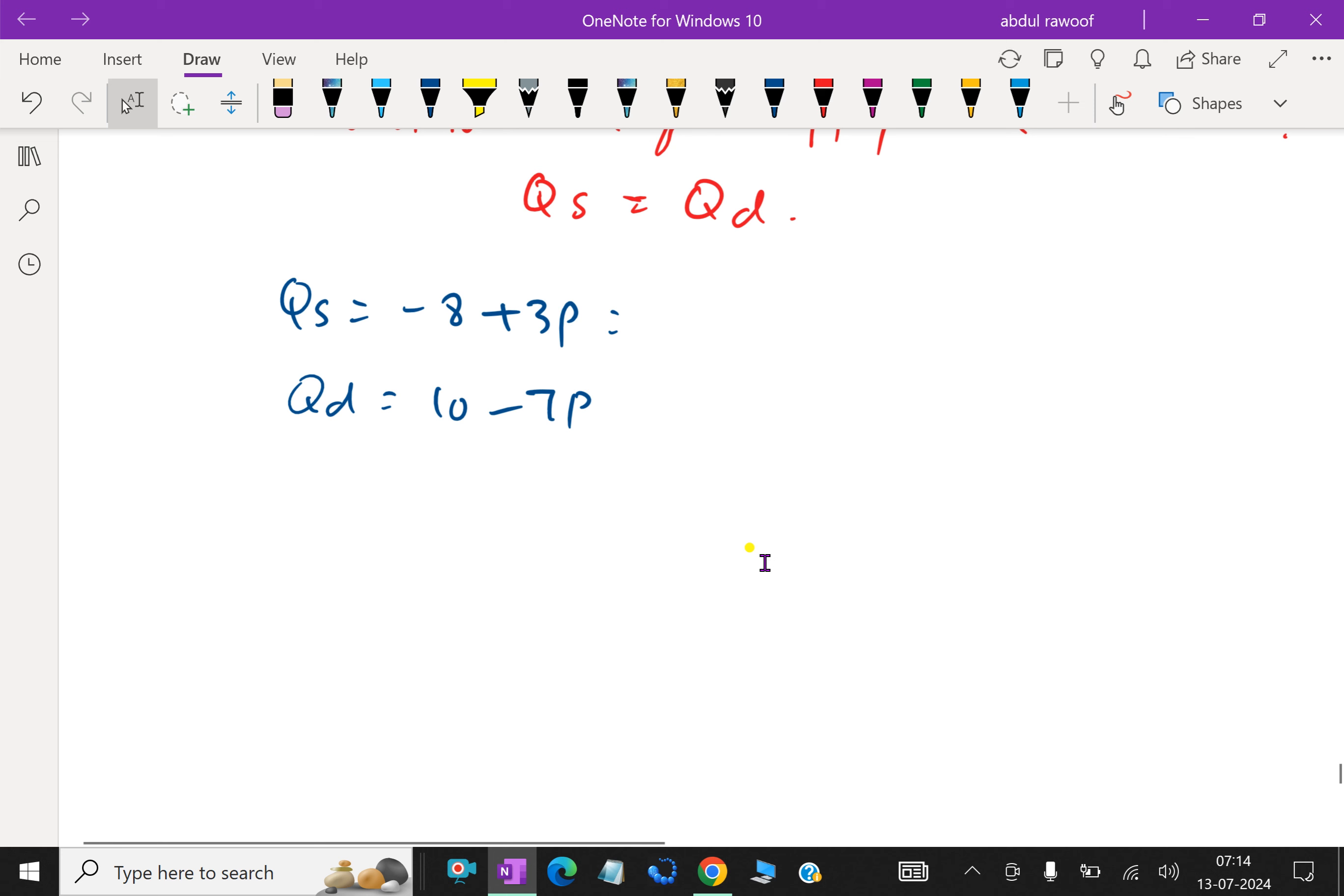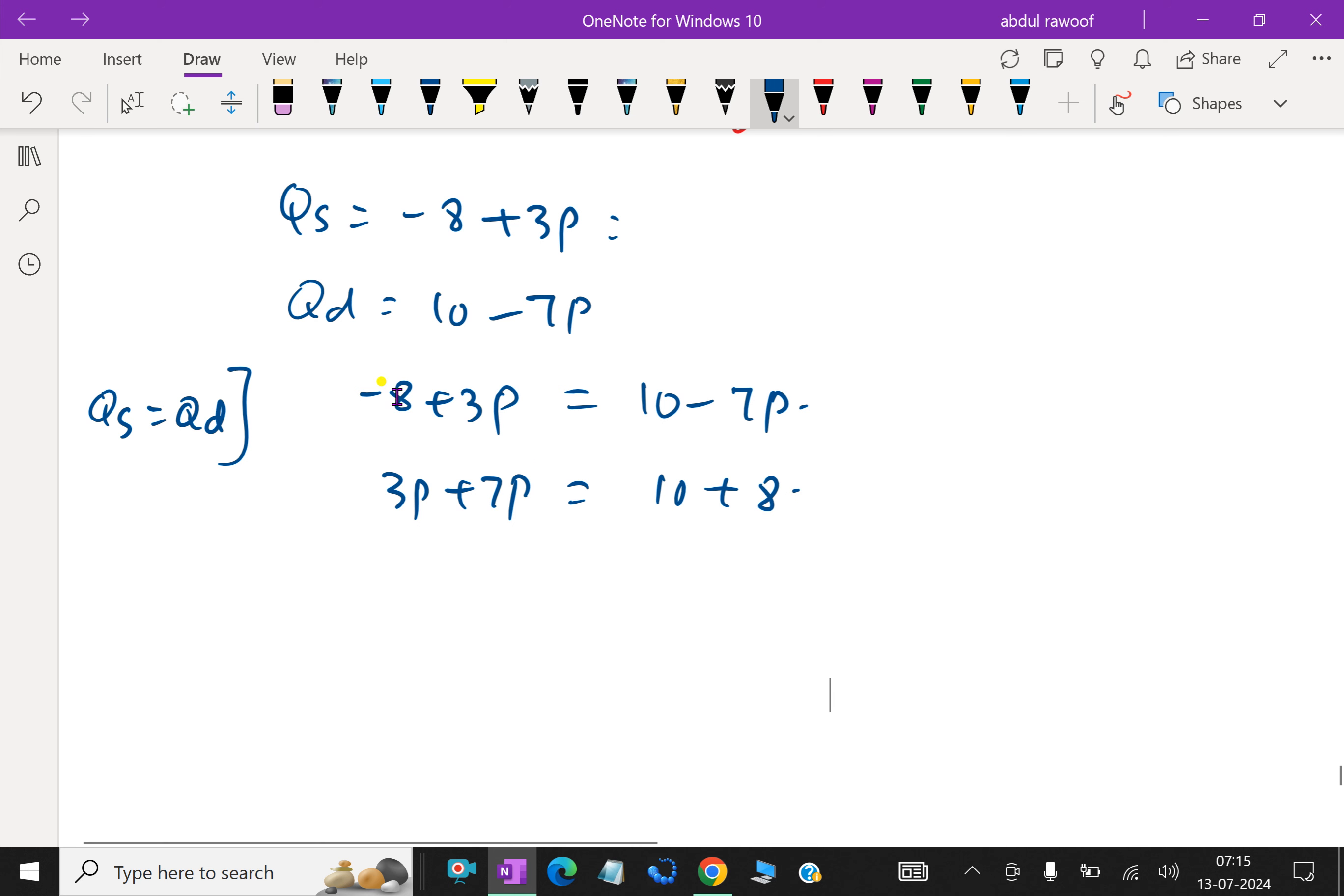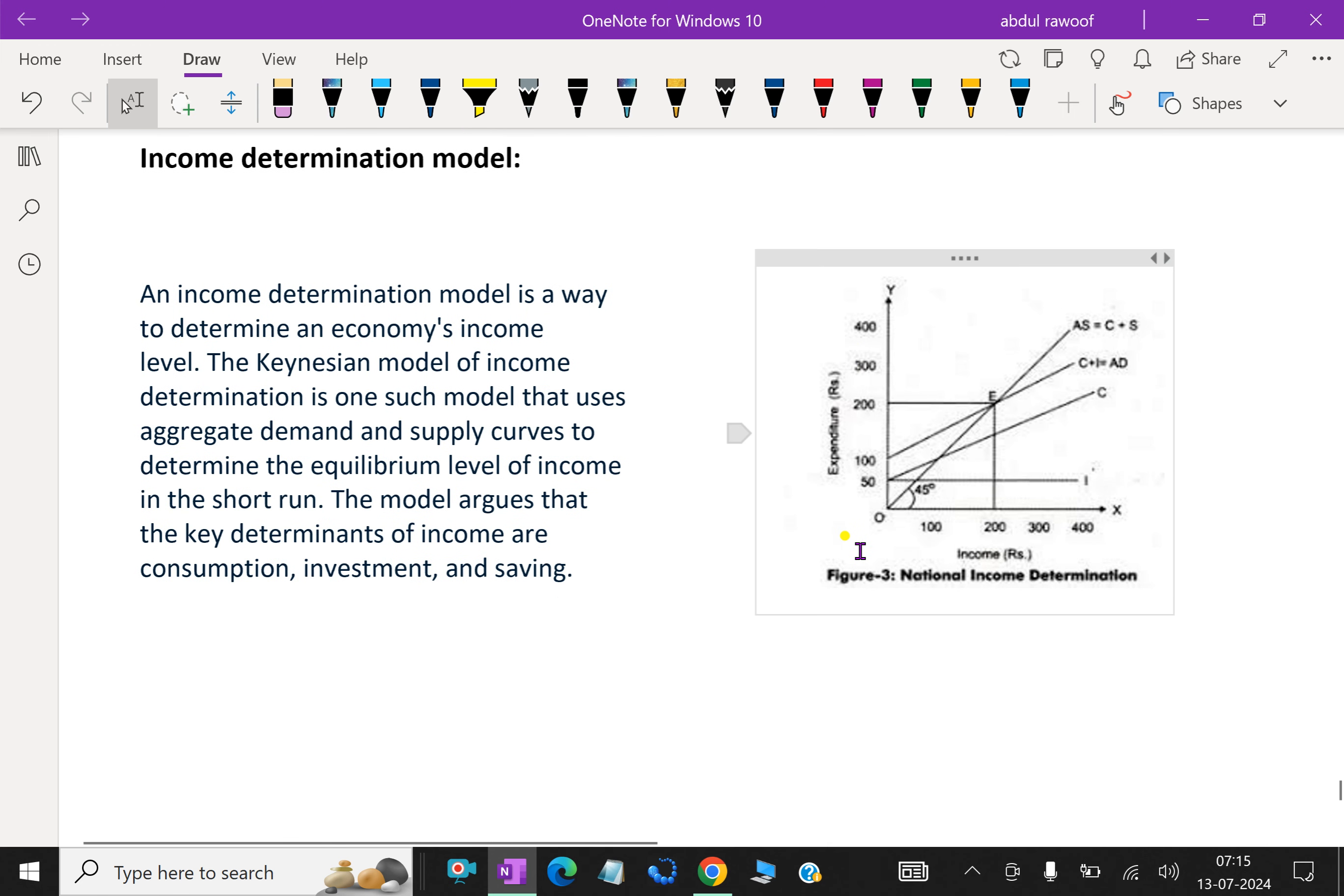Using supply and demand analysis, equating both, minus 8 plus 3p is equal to 10 minus 7p. 7p comes this side as plus 7p, so 10p equal 18. Therefore p equal 18 over 10 which is equal to 1.8. At equilibrium where demand and supply both are equal, the price must be 1.8, that is equilibrium price.